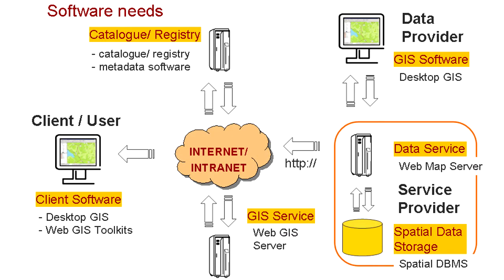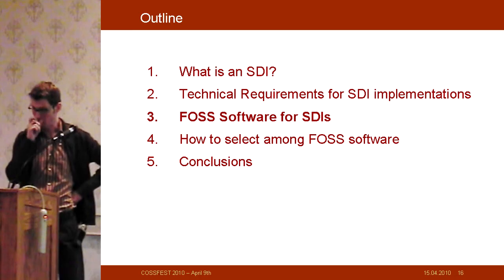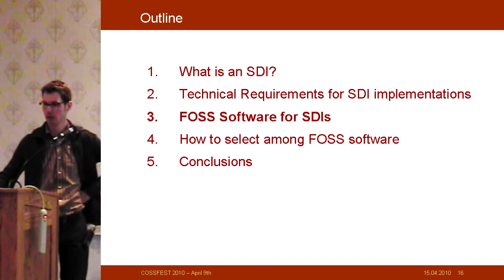For software needs: the data provider side uses desktop GIS to create and maintain data. On the client side, depending on the user's interests, it could be desktop GIS for analysis or a web application in a browser like Google Maps. Web toolkit software is also needed because someone has to develop these interfaces. On the service provider side, we have web map services, spatial database management systems for storage, catalog registry and metadata software, and GIS web service servers.